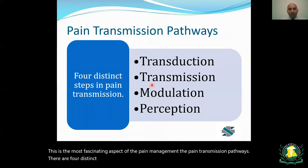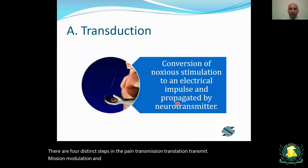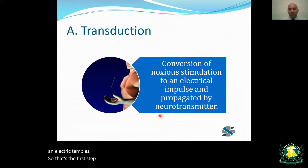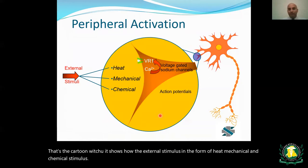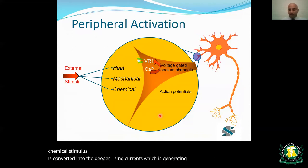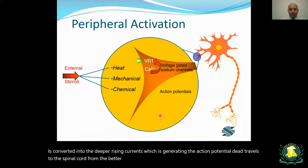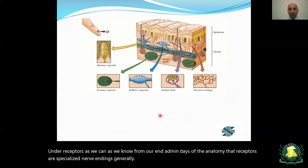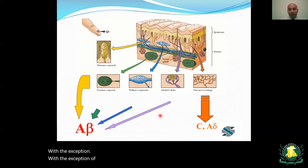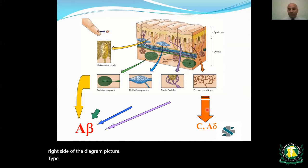There are four distinct steps in pain transmission: transduction, transmission, modulation, and perception. Transduction is the conversion of a noxious stimulus to an electric impulse. External painful stimuli — in the form of heat, mechanical, and chemical stimulus — are converted into depolarizing currents generating action potentials that travel to the spinal cord via voltage-gated sodium channels. Pain fibers, unlike other receptors, have no specialized nerve endings; type C and A-delta fibers are free nerve endings.